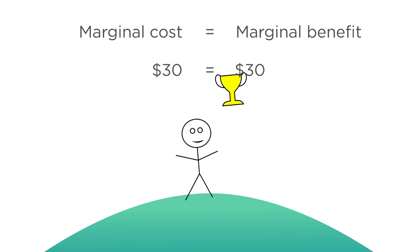But if a firm gets carried away and produces a ninth snitch at a marginal cost of $40, the price of $30 isn't enough to compensate the firm for that extra cost. The firm is losing money — not overall, but it's losing money on that ninth snitch. Overall profits are reduced by $10, back down to $50.